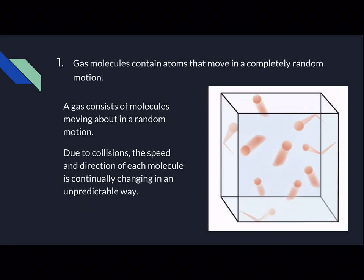Number one, to explain it a little: gas molecules contain atoms that move in a completely random motion. A gas consists of molecules moving in a completely random motion, as seen in the diagram. Molecules are going all different directions and at different speeds, and the only way to change where they are going is if a wall or another molecule hits them.